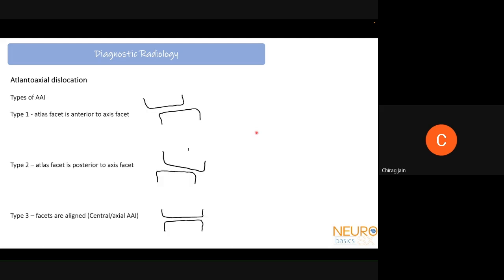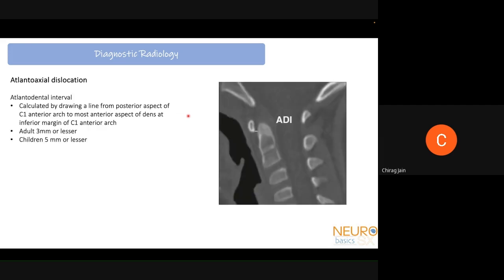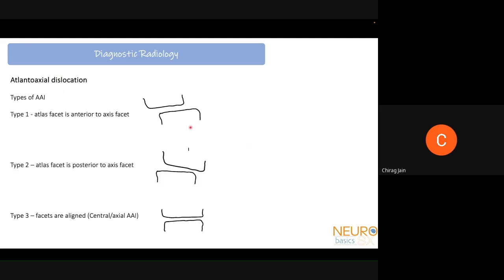Atlanto-axial instability can be of multiple types. The main problem lies at the level of the C1-C2 facets, not just the ADI in the midline. There are three types: Type 1 is where the atlas facet shifts anteriorly relative to the axis facet; Type 2 is where the atlas facet has shifted posteriorly; and Type 3 is where the facets are aligned but instability persists without central atlanto-axial displacement.